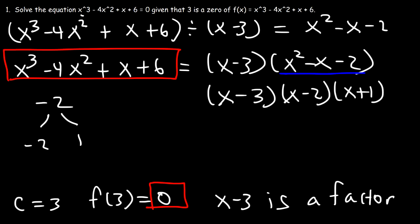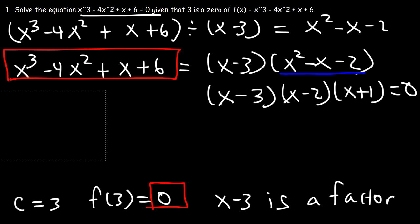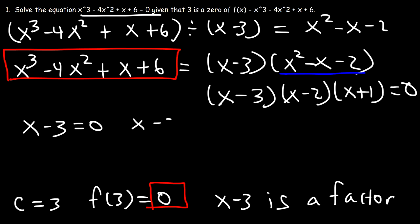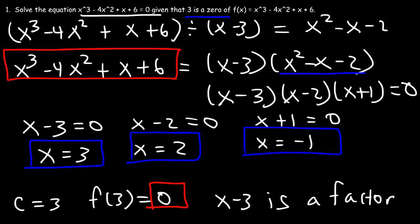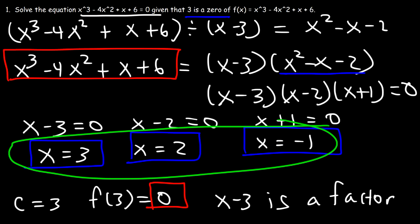Since the expression equals zero, we set each factor equal to zero. The zeros of the function are 3, 2, and negative 1. We were given that 3 was a zero; the other two are 2 and negative 1. So the answers are x = 2 and x = negative 1, in addition to x = 3.